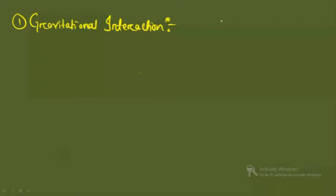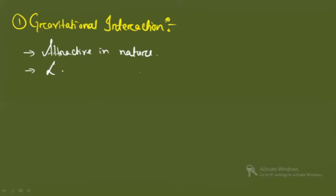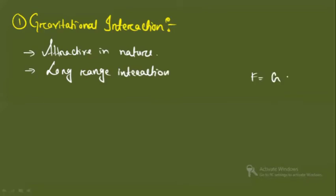The first interaction we will discuss is the gravitational interaction. Gravitation is the attraction between objects which have mass or energy. For example, a planet orbiting a star is an example of gravitational interaction. The first point is that gravitational force is attractive in nature. The second point is that it is a long-range interaction. We know F = GMm/r², where G is the gravitational constant, M and m are the masses, and r is the distance between the two objects.